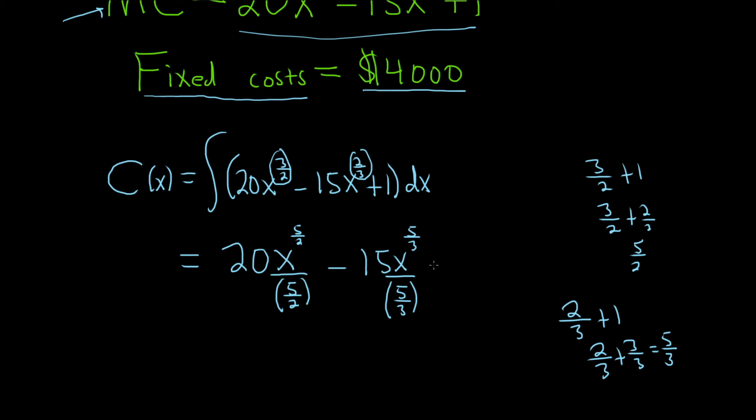And then when you integrate 1, you get x. And let's not forget our constant of integration, capital C. So this is our cost function, and we're told that fixed costs are 4,000. So everything here depends on x, except the C. So this is going to be the fixed cost. So we'll go ahead and plug in the 4,000 in a minute.